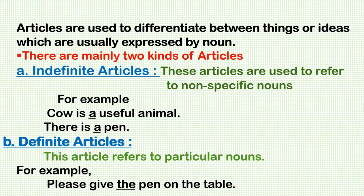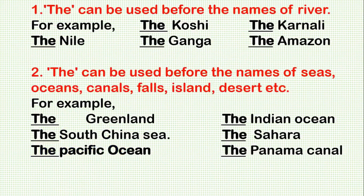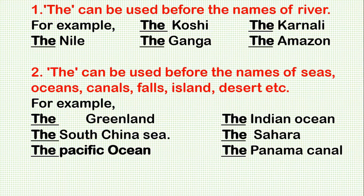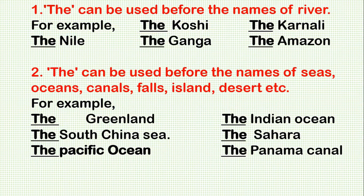The definite article 'the' is used before the names of rivers. For example: the Kusi, the Karnali, the Nai, the Kanga, the Majan, the Brahmaputra, the Rabhi, the Vangu, etc.